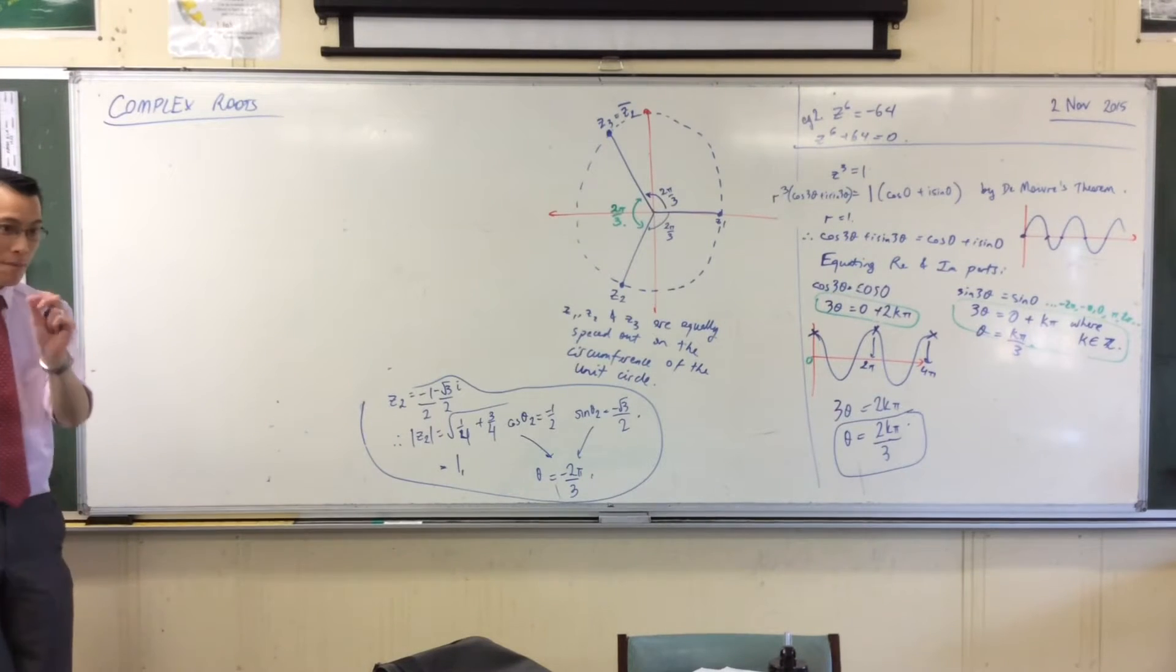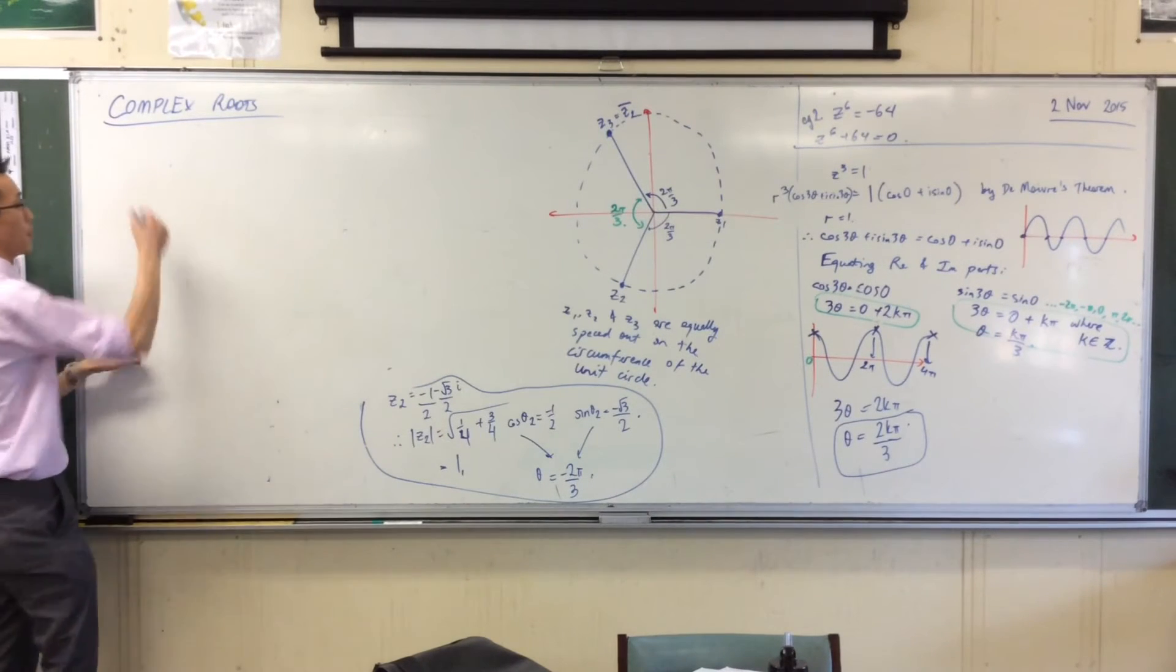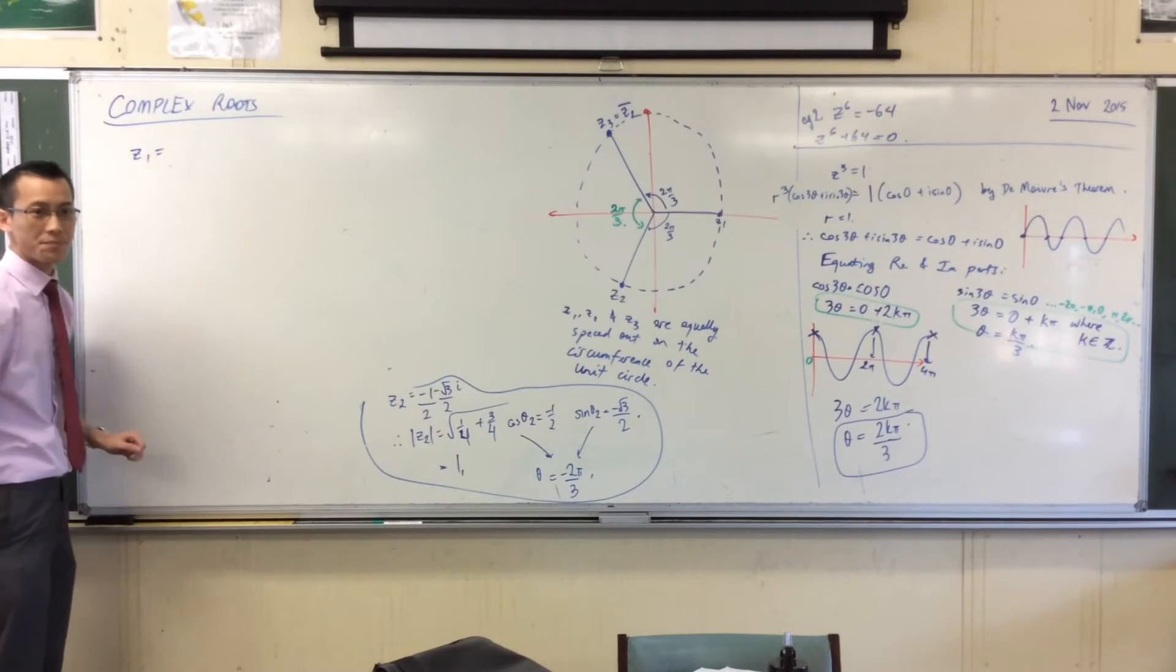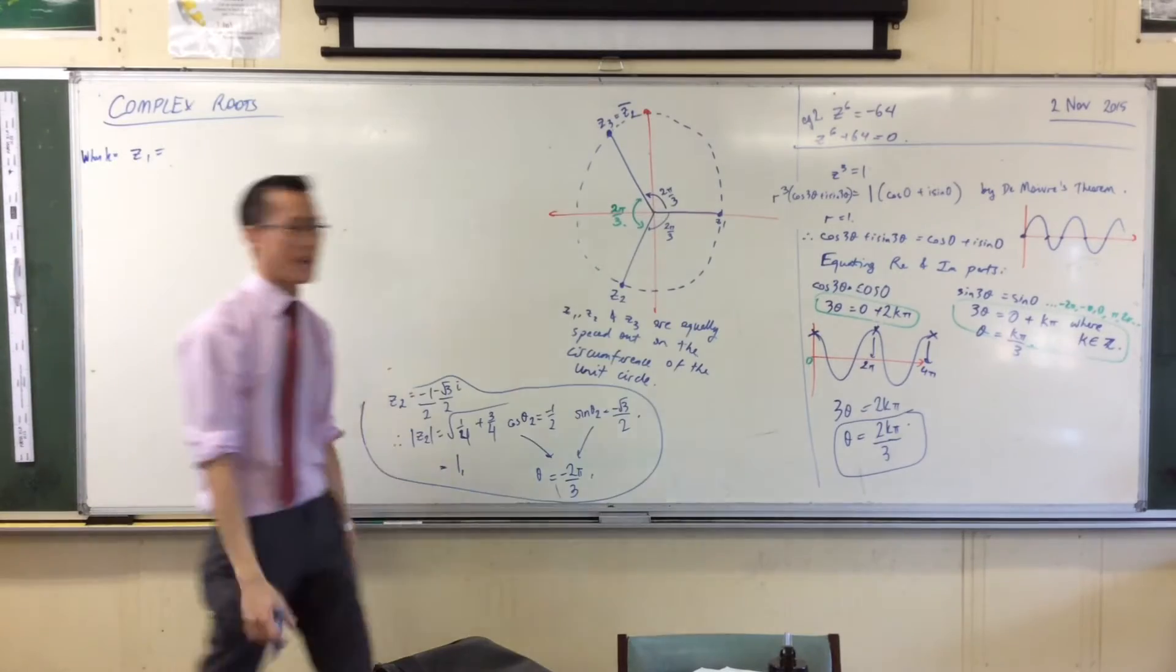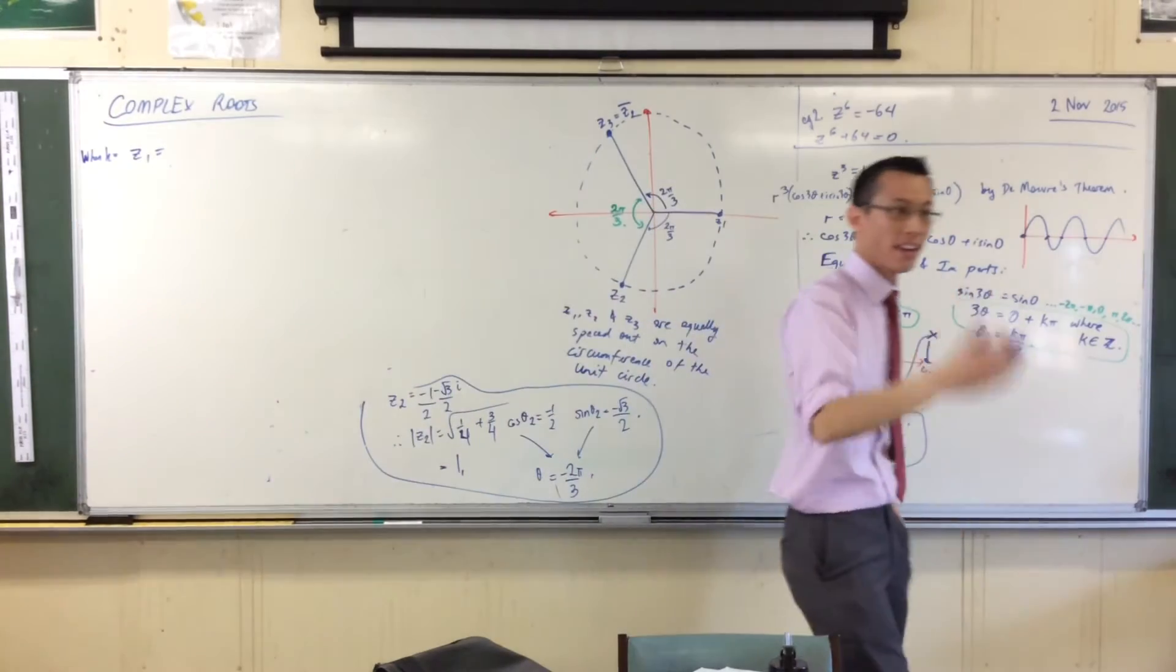Alright, so now I'm going to write my solutions. Now remember, I'm expecting three of them. So z1 is when k is equal to, now pick a value for me. k can be any integer you like. Give me a value.